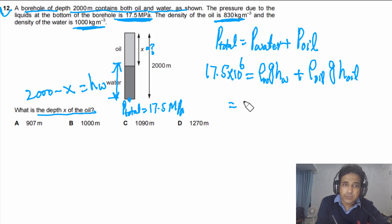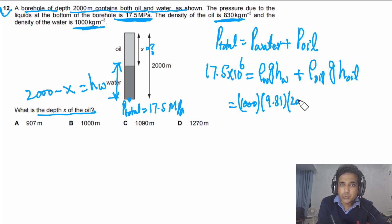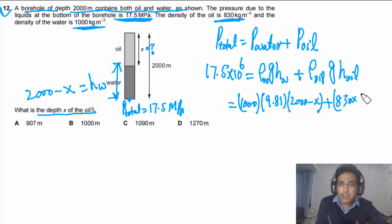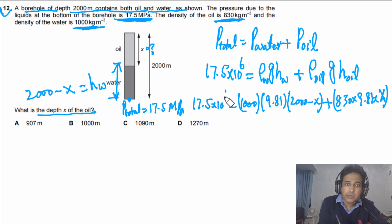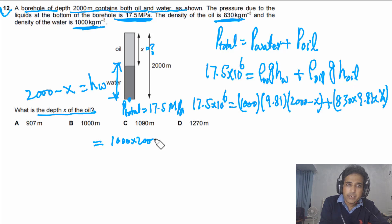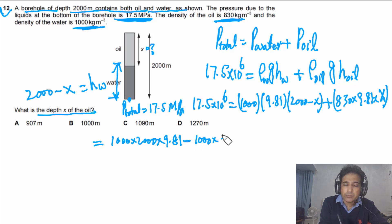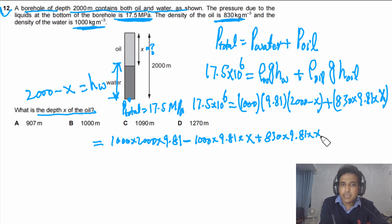Plugging in values: 17.5 × 10⁶ = 1000 × 9.81 × (2000 − x) + 830 × 9.81 × x. Expanding the water pressure term gives 1000 × 2000 × 9.81 minus 1000 × 9.81 × x, plus 830 × 9.81 × x.